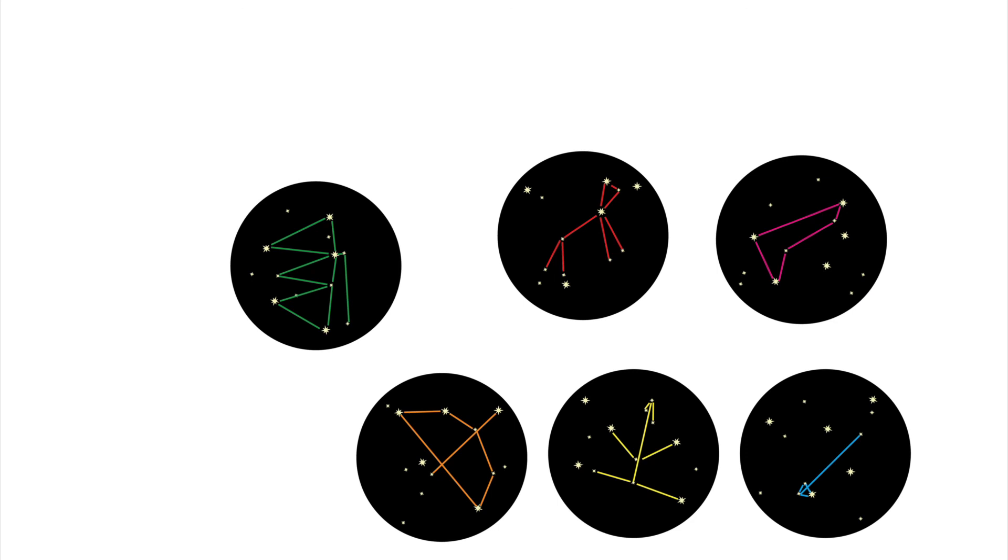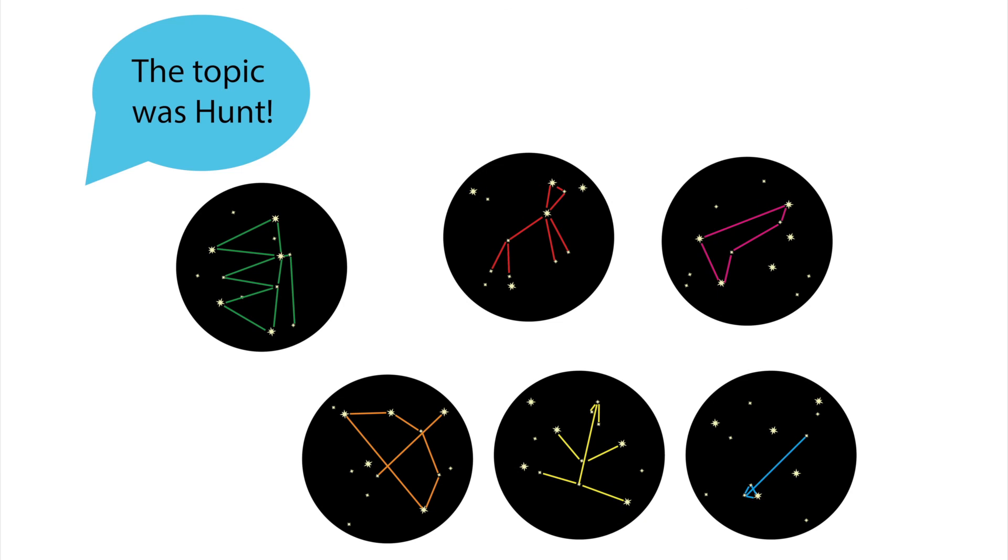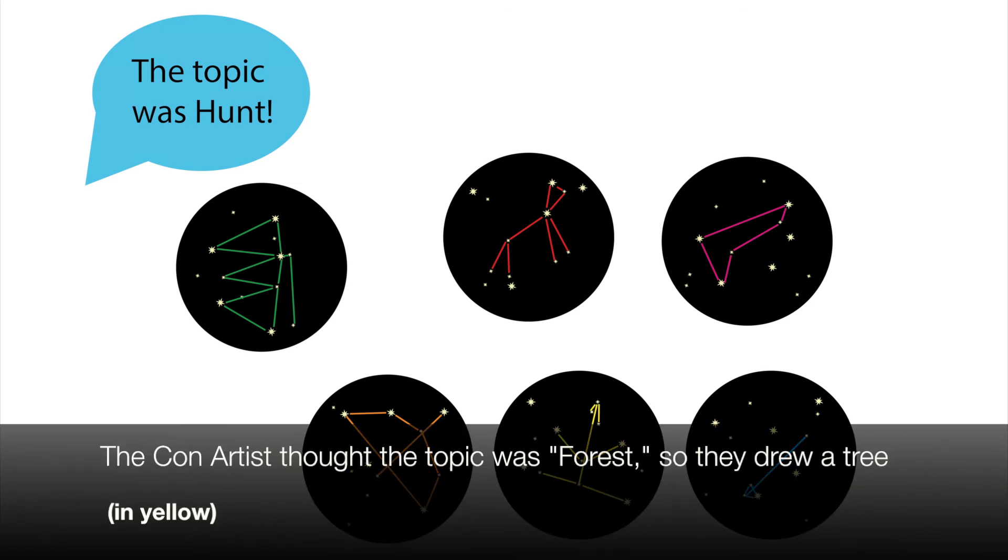The head astronomer announces to all players, for the Con Artist's benefit, what the topic was, and now, with every player's constellation on display, the group must discuss and determine which constellation they suspect to be the Con Artist. Because the Con Artist now knows what the topic was, they must scramble to provide a believable excuse for what their constellation is and how it relates to the topic.